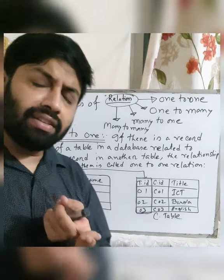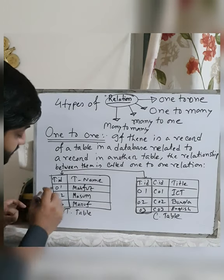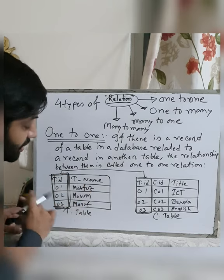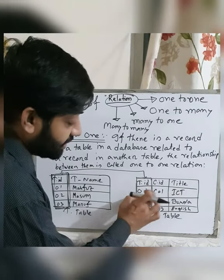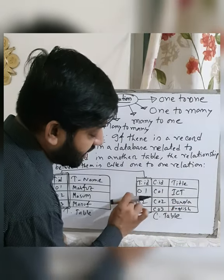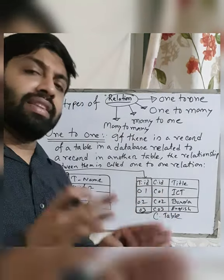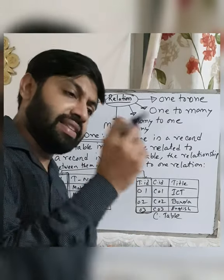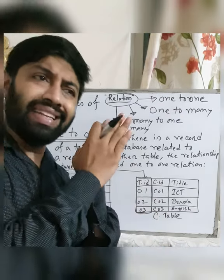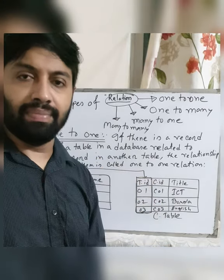The Teacher ID in the Teacher Table is also the primary key — it is unique and cannot be matched with any other teacher's ID. You can see that in the Course Table, the Course ID (C01) is different from the Teacher ID, so they do not match. The basic requirement for a primary key is that it must contain unique information and must be able to identify a single entity in the database.